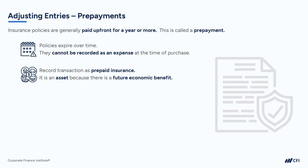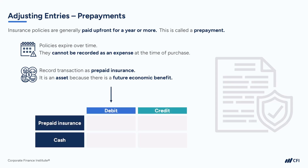To start, we record the transaction. We would debit prepaid insurance — remember, when we increase an asset, we debit it. And we credit cash because we're decreasing cash as an asset. Now, as time goes on, we're going to make adjustments to reflect how the policy is expiring. Let's take a look at a real concrete example so we can better understand how this process actually works.